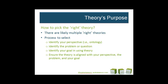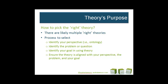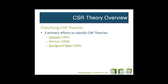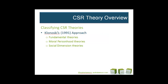If you're strategic about it, then you'll pick a theory that makes sense for the problem that you're trying to solve. I like the emphasis on a strategic and aligned process to theory selection because in CSR, in particular, there are more than 25 theories specific to CSR, and loads more that could be used depending on the particular organizational context. But it's helpful to start with some academic efforts to classify CSR theories. There are three articles that I've found that are really helpful in this respect.